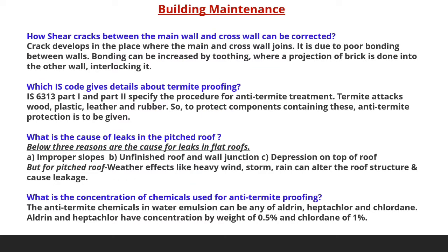The next question is: how can shear cracks between the main wall and cross wall be corrected? The crack develops at the place where the main and cross wall joints, due to poor bonding between walls. Bonding can be increased by projecting bricks into the other wall, interlocking them.